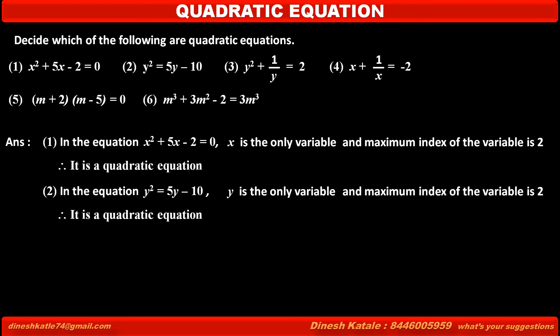Now see the third equation: y squared plus 1 over y is equal to 2. In this equation, the first term is y squared, and the second term is 1 over y, meaning the variable is at the denominator. So we have to remove the denominator by multiplying both sides by y. Doing so, we get y cubed plus 1 is equal to 2y. Here, y has a maximum power of 3, so the degree of this equation is 3.